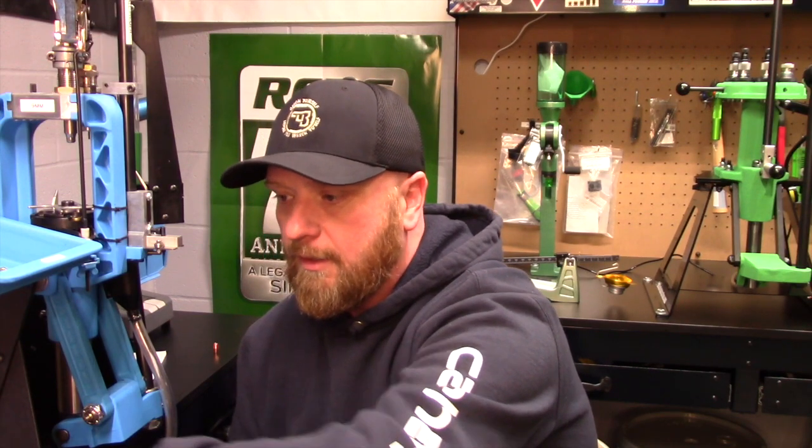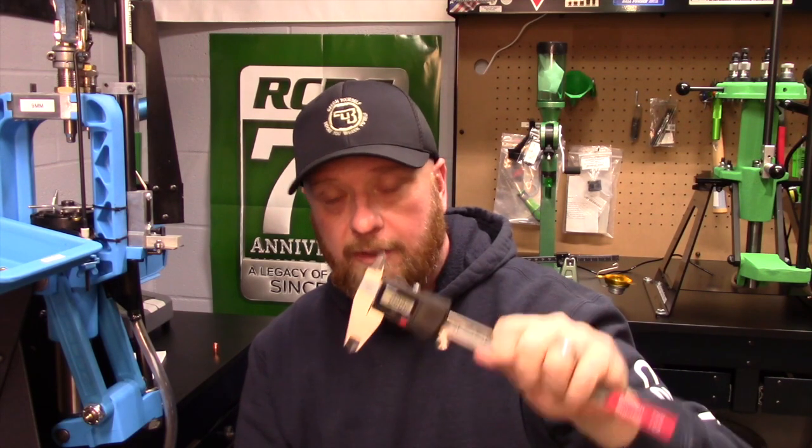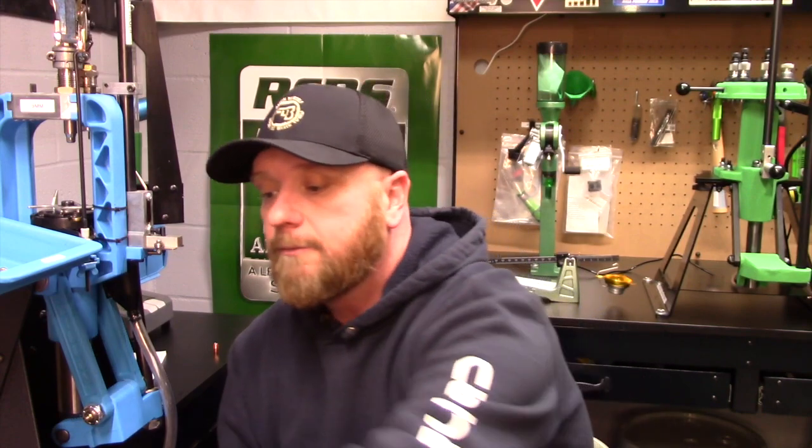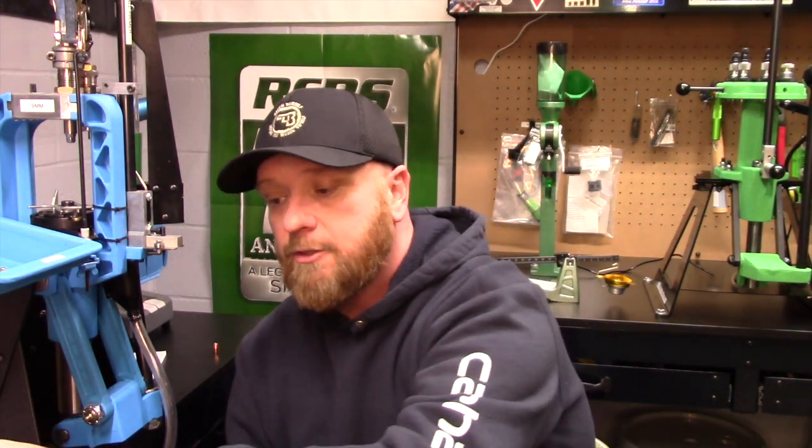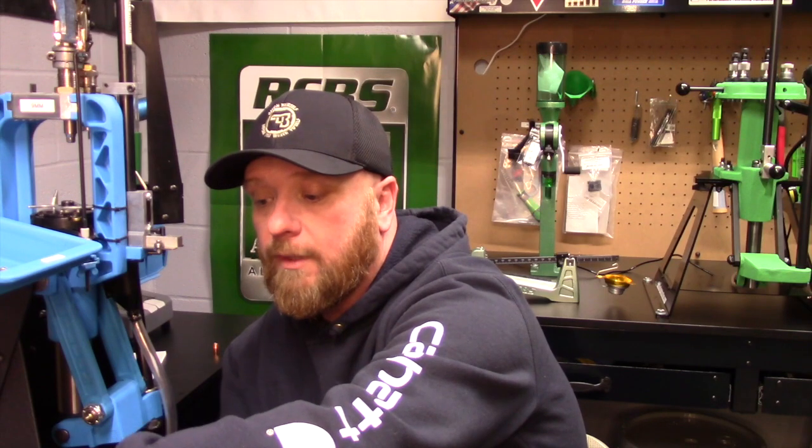The things we're going to need today: we need a way to measure our case overall length, so we need a good set of calipers—digital, dial, vernier, whatever you have. We're going to use a Dillon 9mm case gauge. I have a couple cases here that I used during our bell setup on our powder measure, so we're going to use these to set our seating depth. There's no sense as we're making adjustments to have powder-filled cases. We're also going to need our projectiles from Hornady, and we're also going to use a bullet puller. I'm going to show you a quick way I make sure my crimp is not too excessive.